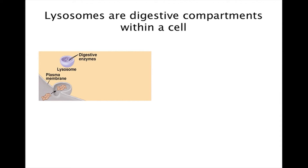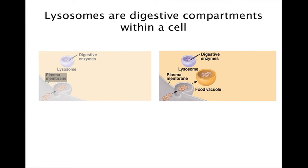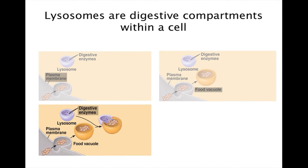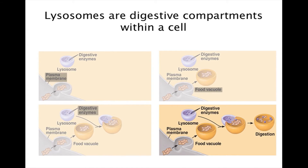A lysosome consists of digestive enzymes enclosed in a membranous sac. Lysosomes have several types of digestive functions. In this illustration, we have a lysosome fusing with a food vacuole to digest the food particles. Lysosomes also serve as recycling centers for animal cells. First, the food particles are taken in by the plasma membrane, then the membrane buds off to form a food vacuole. Afterward, the lysosome fuses with the food vacuole and its digestive enzymes break up the food particles into smaller substances. This is the mechanism for cell digestion.